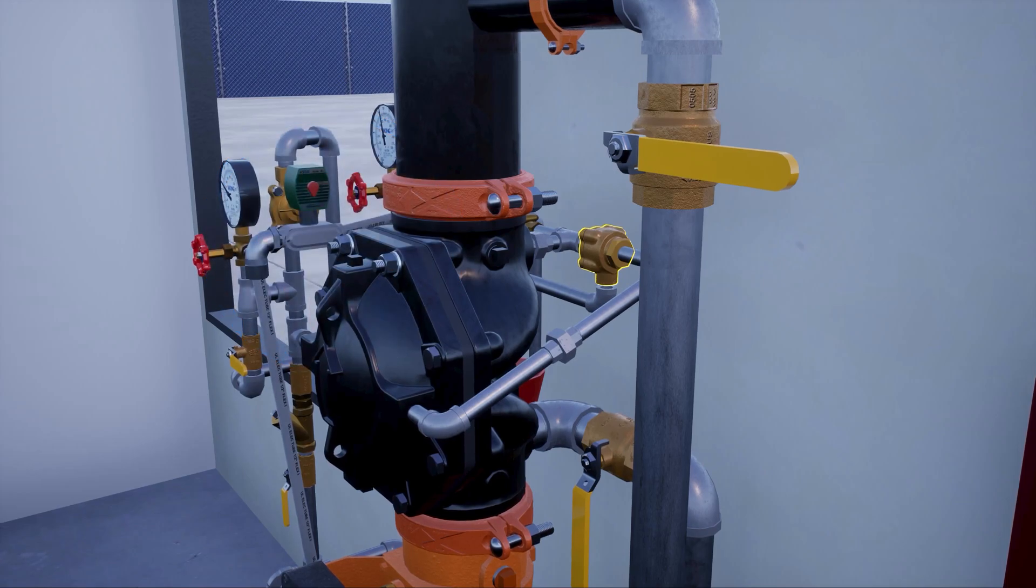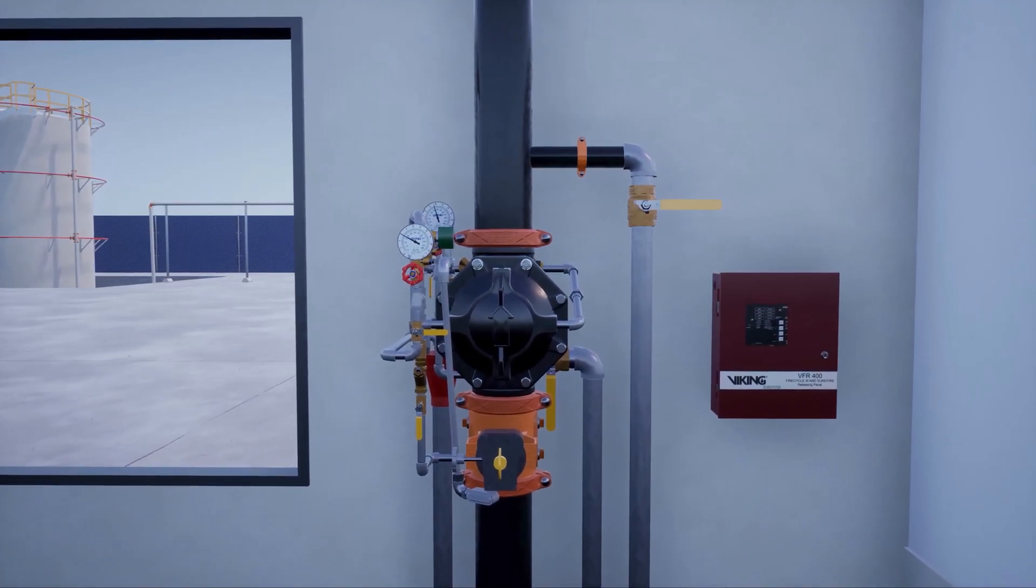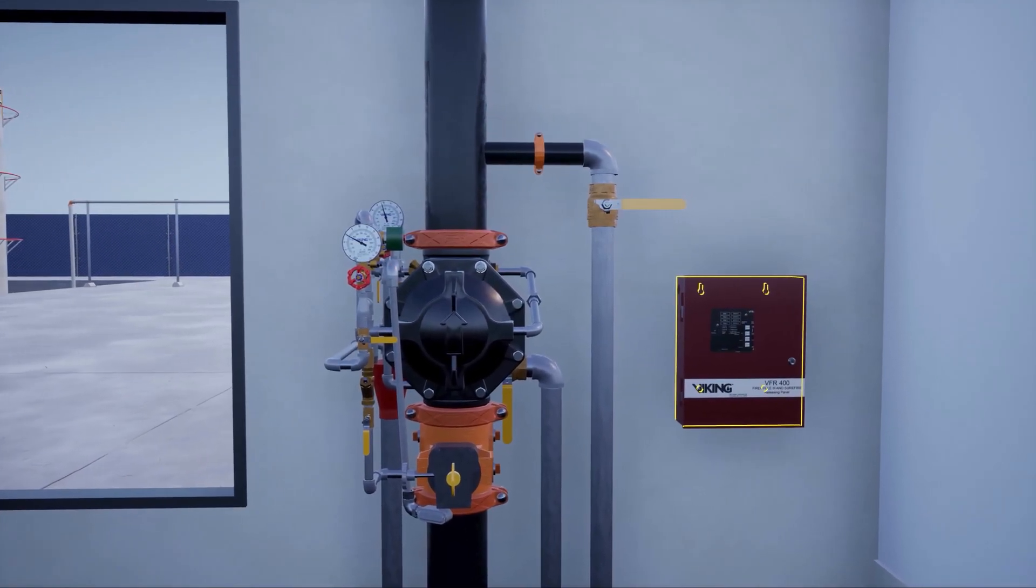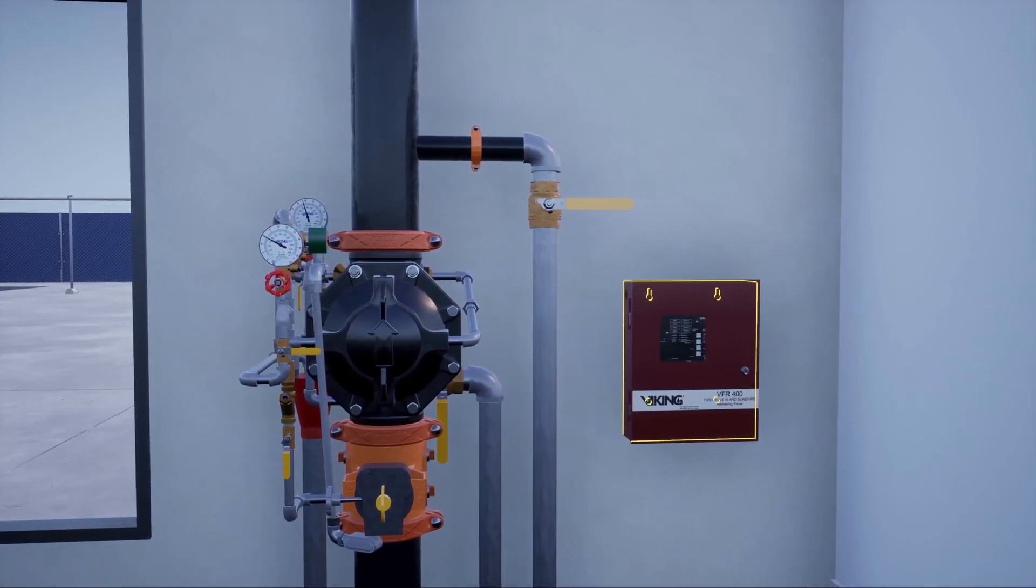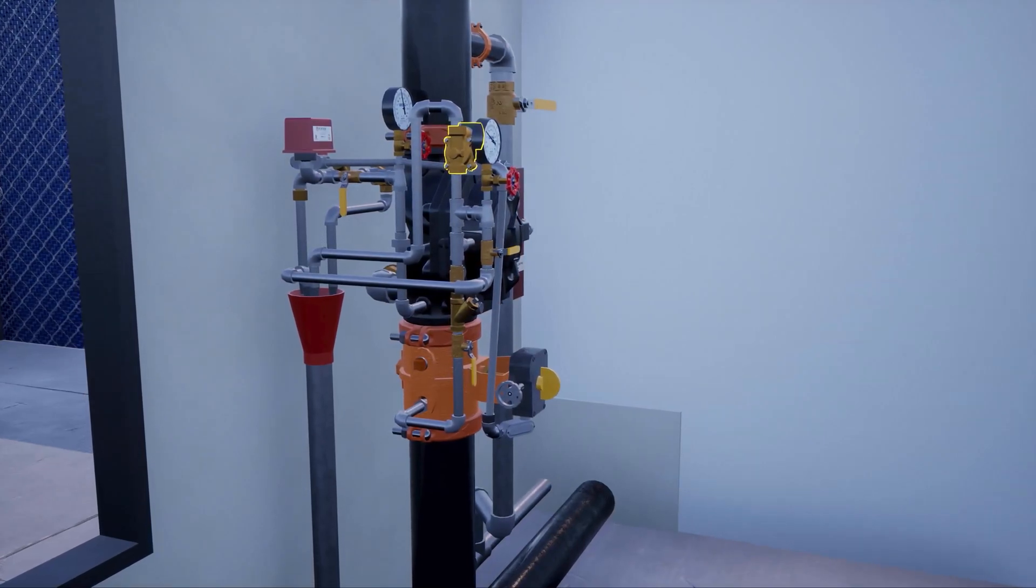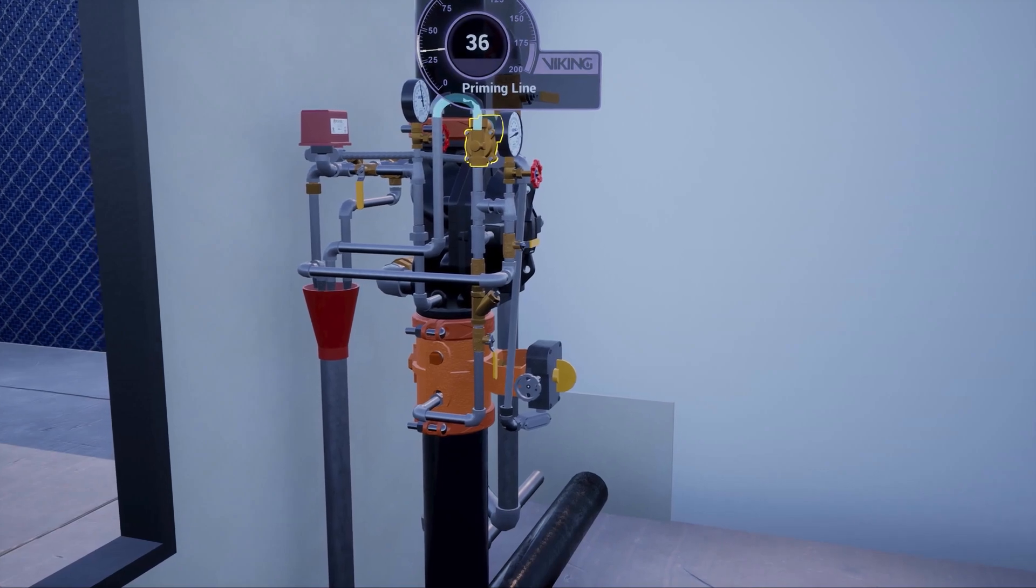In a scenario where a fire has started in or near the storage tanks, the electric detection device activates and sends a signal to the VFR 400 release control panel. The electric solenoid valve is powered open, releasing water pressure from within the priming chamber of the deluge valve.